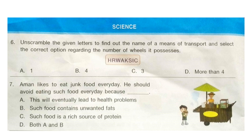Question 7: Aman likes to eat junk food every day. He should avoid eating such food every day because dash. Options are: A — this will eventually lead to health problems; B — such food contains unwanted fats; C — such food is a rich source of protein; D — both A and B.